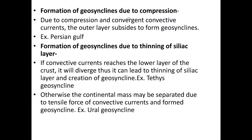The third type is formation of geosynclines due to compression. Here, convergent convective currents play a major role, causing the outer layer to subside and form geosynclines — similar to the metamorphism mechanism. Example: the Persian Gulf.